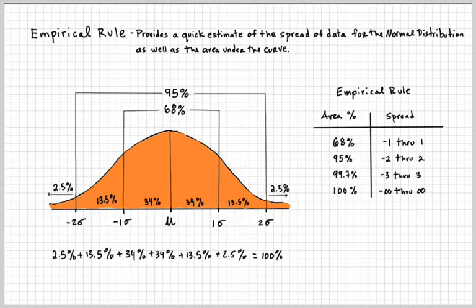And then 100% of the curve, to shade it, goes from negative infinity to infinity. So, sometimes you'll see the empirical rule as what they call the three sigma rule, or the 68-95-99.7 rule. And, that's what you probably will find in the book.